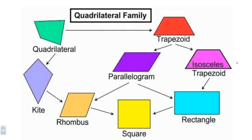Now, quadrilaterals — a quadrilateral is a four-sided polygon. The square is our regular quadrilateral, where all sides are the same length and all angles are the same — those would be 90-degree angles. A rectangle also has all 90-degree angles, but only the opposite pairs of sides are the same. A square is officially a special type of rectangle, so a rectangle is a quadrilateral with four 90-degree angles.